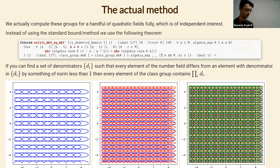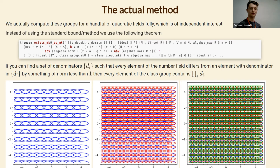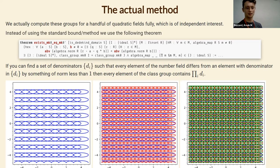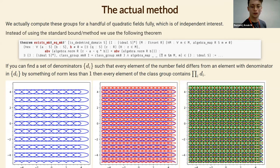This is a different proof from the usual one. We felt it required less background. There's a relation here to being norm-Euclidean: if you can do this with the set of denominators equal to just one, that says your number field is norm-Euclidean — there exists a Euclidean algorithm where the distance function is the norm. This is a generalization of that property.